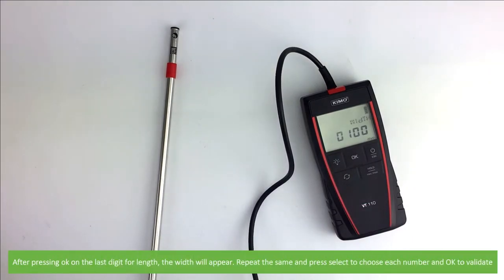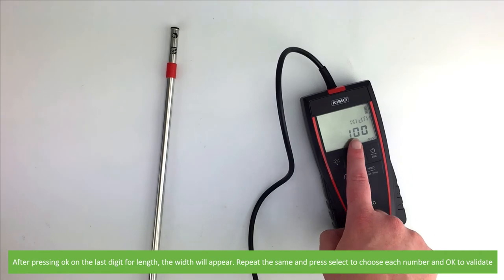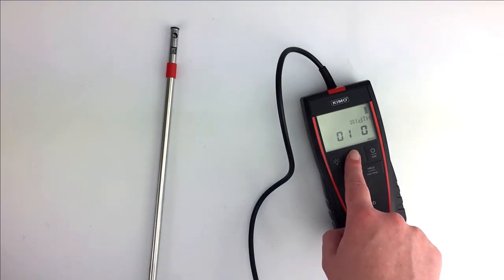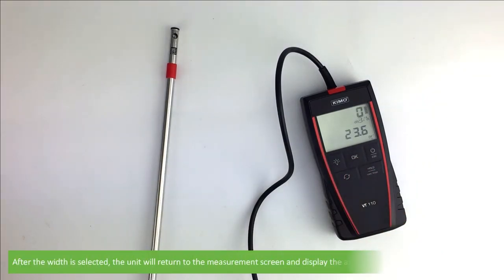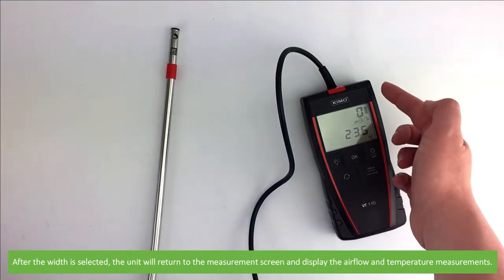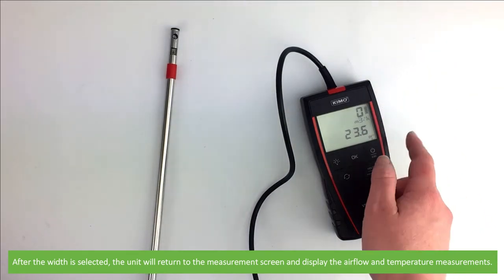After pressing OK on the last digit for length, width will appear. Repeat the same and press select to choose each number and OK to validate. After the width is selected, the unit will return to the measurement screen and display the airflow and temperature measurements.